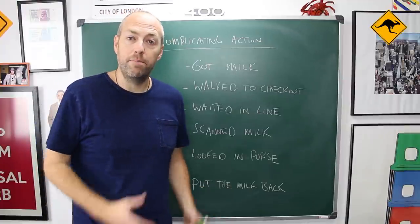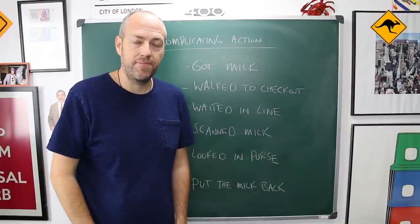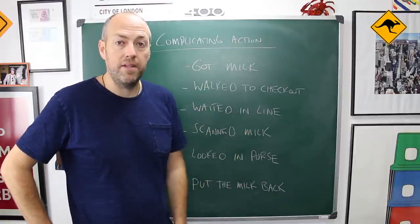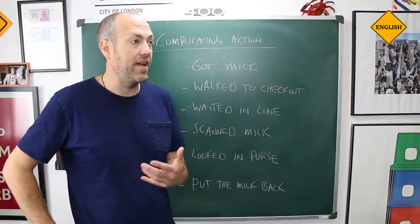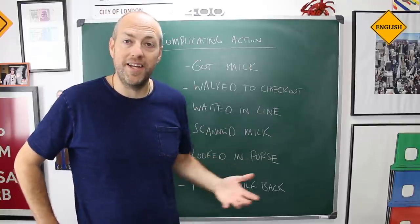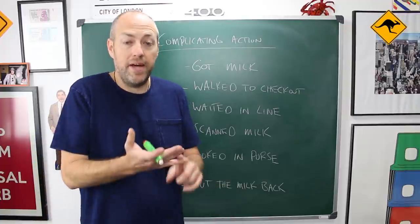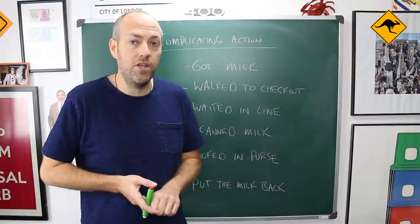So, I put the milk back. Now, as you can see, I have written this story all in the past simple. And normally, when you're telling a story in the past, you use the past tense as past perfect, past simple, past continuous.